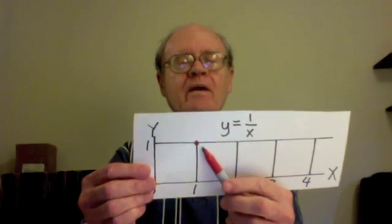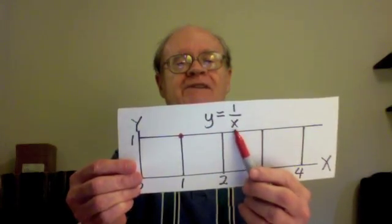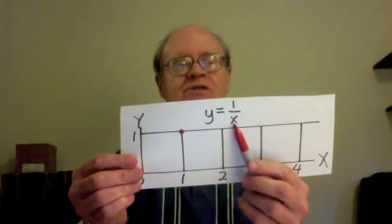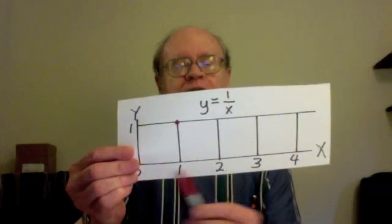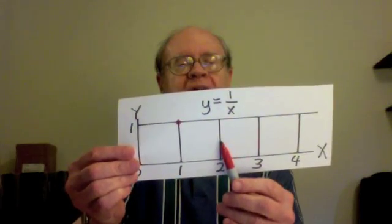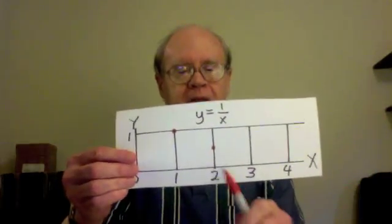Right there. Next, when x is 2, y is 1 over 2, which is 1 half. And so I go over 2 and up 1 half, and I mark that point. And that's there.